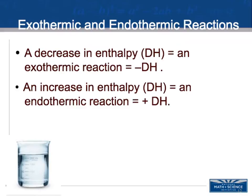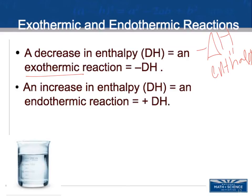A negative change in enthalpy — delta H — is an exothermic reaction: it releases heat. An increase in enthalpy, a positive delta H, is an endothermic reaction. Consider the evaporation of water in a beaker at room temperature: we know it occurs, so it is a favored reaction. In this case, heat enthalpy is absorbed, making it endothermic with a positive delta H — which would seem unfavorable.